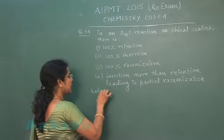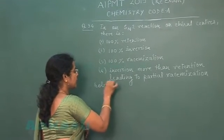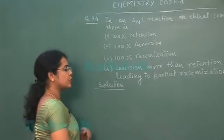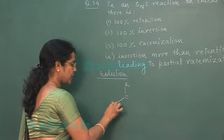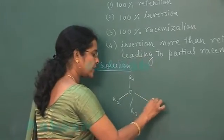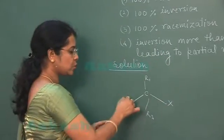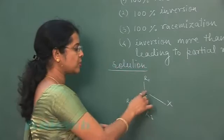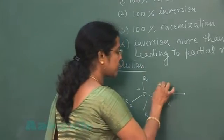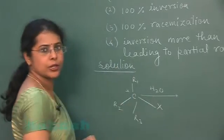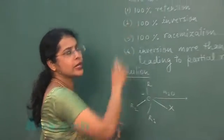Suppose we are considering the hydrolysis of a tertiary halide. R1, R2, R3 and this is halogen. These three alkyl groups are different. So this carbon atom is chiral carbon atom. Now reaction is hydrolysis reaction. So reaction will proceed via SN1 mechanism.